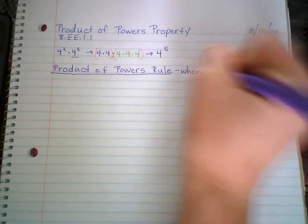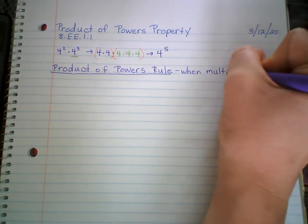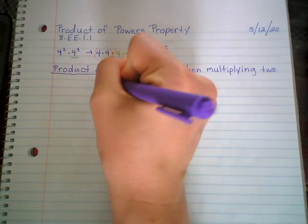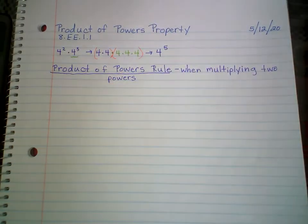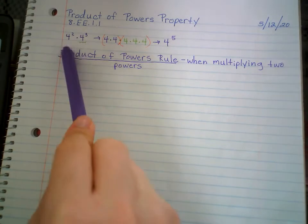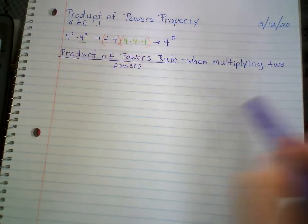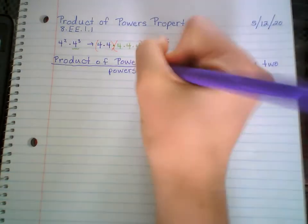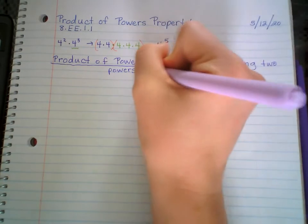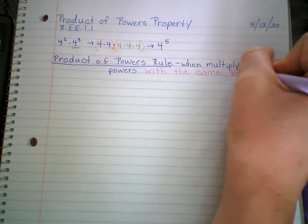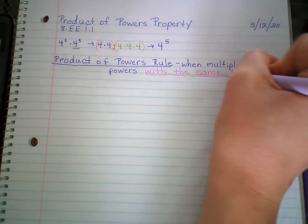When multiplying — so when you multiply two powers. And let's recall from yesterday, a power is the whole thing: it's the base with the exponent. So when you're multiplying 2 powers, we have 4 to the 2nd — that's one power — times 4 to the 3rd. When multiplying 2 or more powers with the same base — that is so important, or else this rule is not true. Same base. They both have 4 as the base.